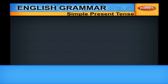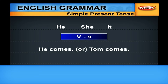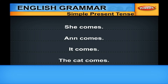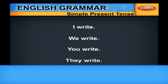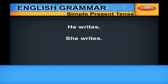If the subject is third person singular — HE, SHE, IT — then you have to add S to the verb, that is the VS form. HE COMES, or TOM COMES, or ANN COMES, IT COMES, or THE CAT COMES. Similarly: I WRITE, WE WRITE, YOU WRITE, THEY WRITE — but HE WRITES, SHE WRITES, IT WRITES. This is a very basic grammar point; you cannot afford to make mistakes in this area.